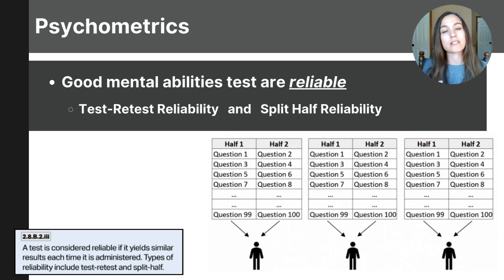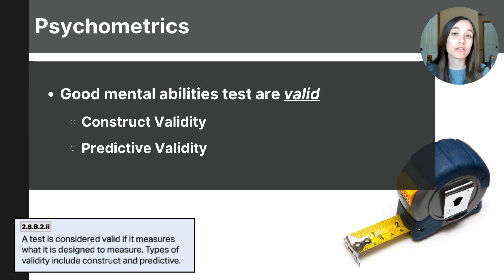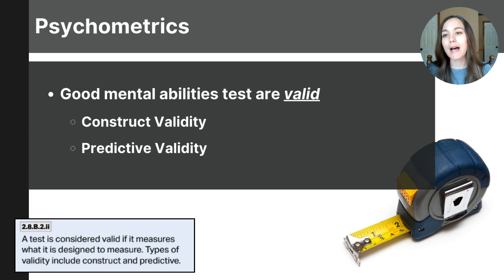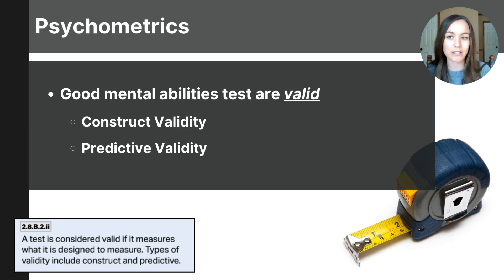Both methods help ensure that the tests use trustworthy techniques in measuring mental abilities. Another important quality to consider when evaluating good mental abilities tests is validity. Validity refers to how well a test measures what it's supposed to measure — a valid test accurately reflects what it claims. Imagine you're measuring the heights of people in your class and you pick up a faulty tape measure that skips the number eight on the inches side.